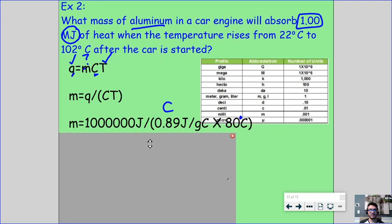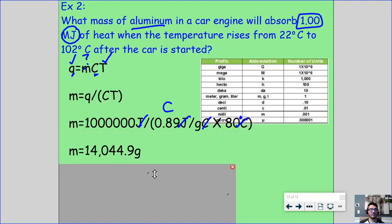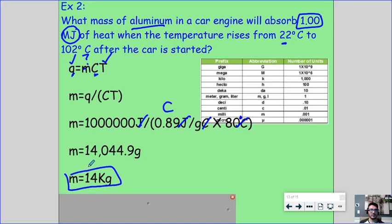So before we move on, look, joules cancels out, Celsius cancels out, and we're left with grams, which is what we need because we're figuring out mass, and we end up with 14,044.9 grams, or 14 kilograms. Number of sig figs here, we have 3 for this number, 2 for this number, 3 for that number, the lowest number of sig figs is 2, so our correct answer rounded to the nearest sig figs is 14 kilograms, or 14,000 grams.